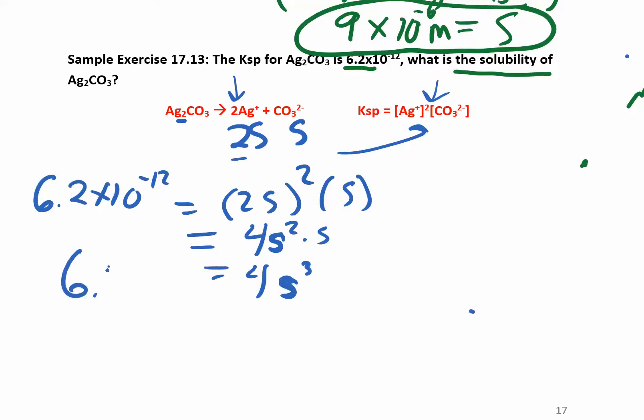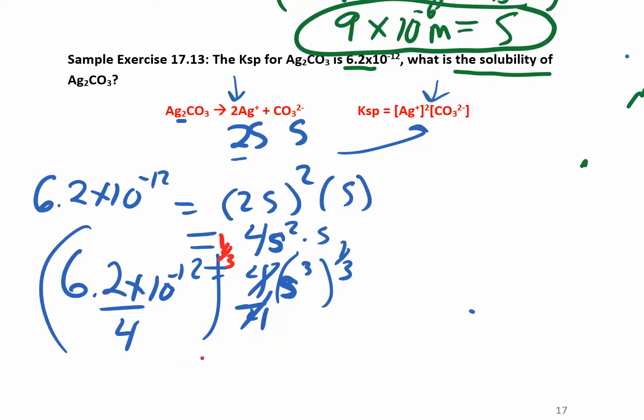6.2 times 10 to the negative 12. So now you want to divide by 4, divide that by 4, and then to get the one-third power, raise this whole thing to the one-third power, one-third.